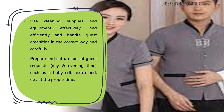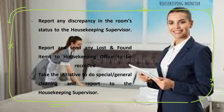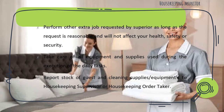Use cleaning supplies and equipment effectively and efficiently, and handle guest amenities in the correct way and carefully. Prepare and set up special guest requests, day and evening time, such as baby crib, extra bed, etc., at proper time. Report any discrepancy of room status to housekeeping supervisor. Report and send any lost and found items to housekeeping office to be reported and kept. Take the initiative to do special general cleaning and report to housekeeping supervisor. Take care of all equipment and supplies used during the execution of daily tasks. Report stock of guest and cleaning supplies and equipment to housekeeping supervisor or housekeeping order taker.